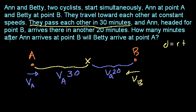How many minutes after Ann arrives at point B will Betty arrive at point A? So Betty was going in this direction. They meet right here, and then she keeps going and hits point A. So the key realization here is that this took Ann 30 minutes to get here, but it also took Betty 30 minutes to get here. So what's this distance in terms of Betty's velocity?